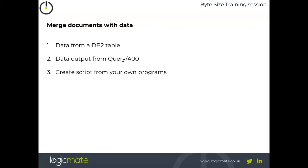Where does the data come from? The data comes from either a DB2 table or a Query400 output, and one record in either of those scenarios will equate to one letter that comes out of the InterWords product. But we could also create our own scripting from custom-built programs — maybe you write an RPG program that puts out some scripting which we can then feed into the InterWords product to control and manipulate the document itself.